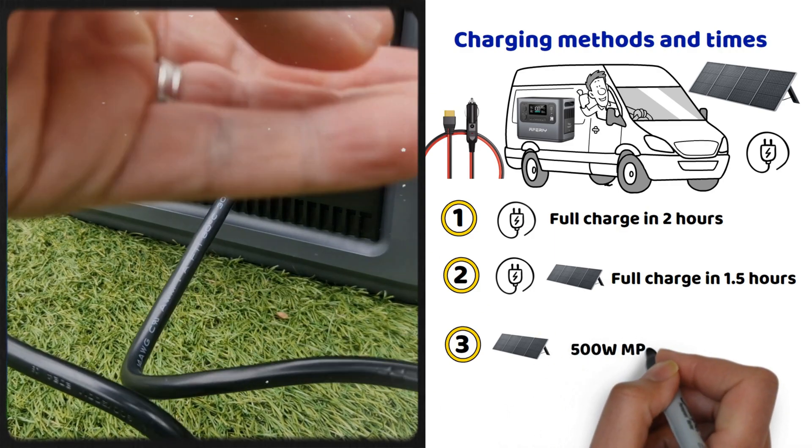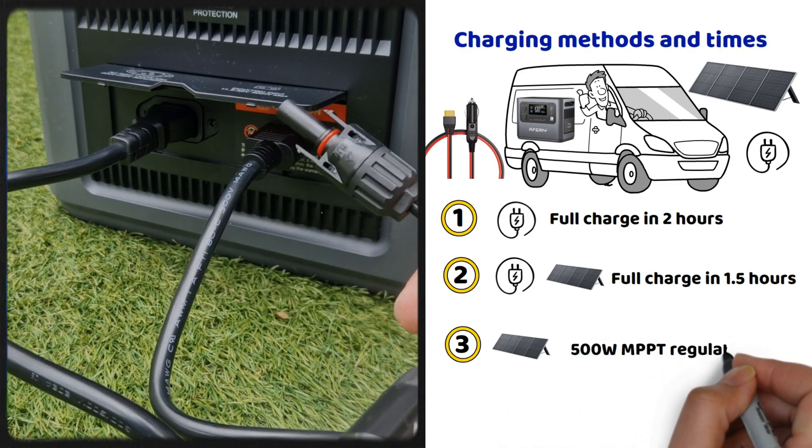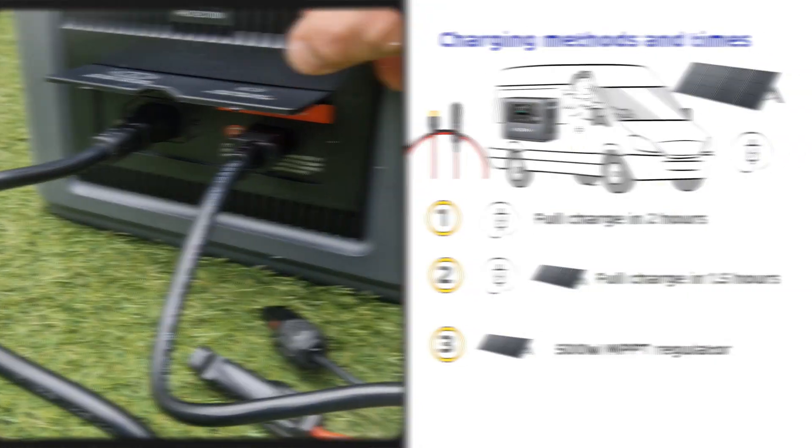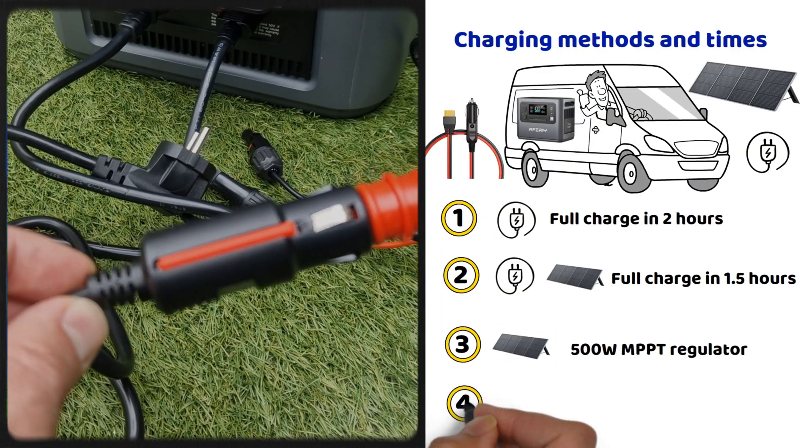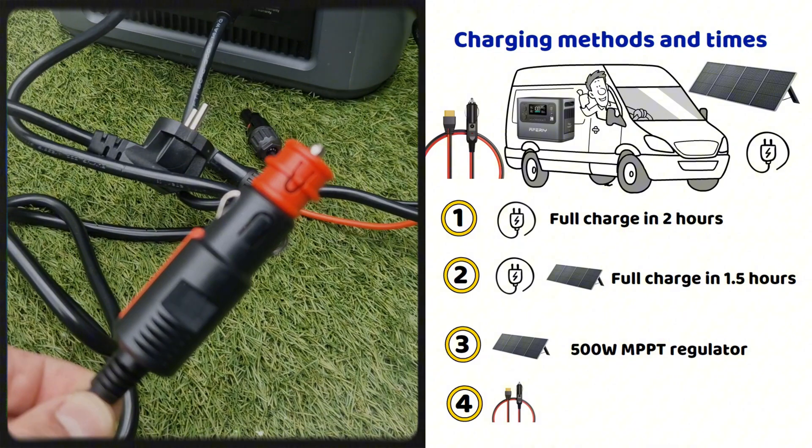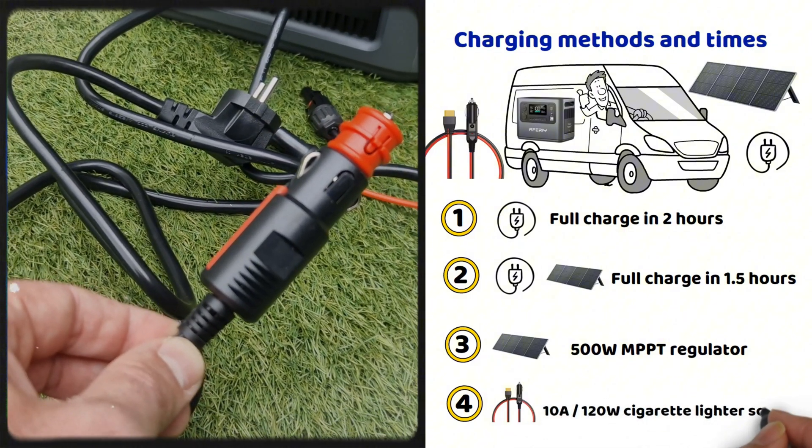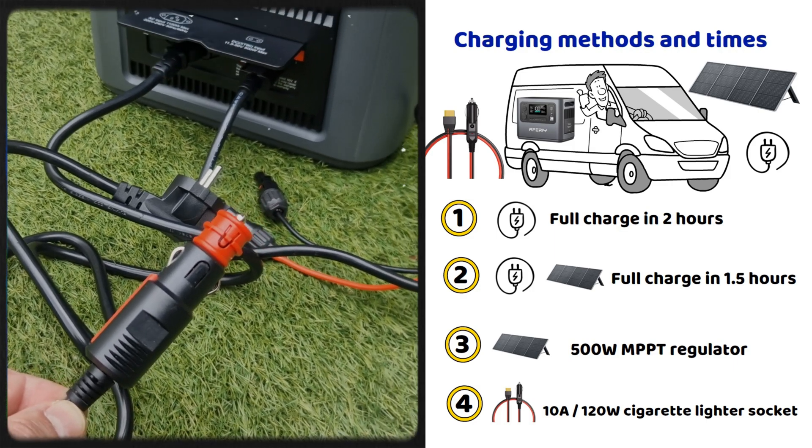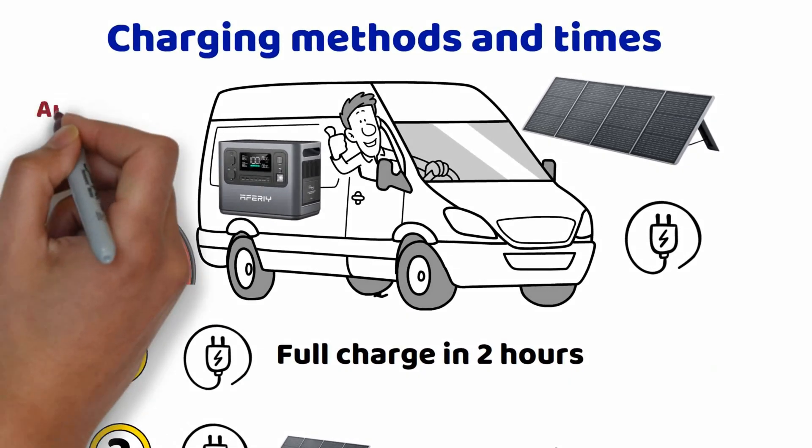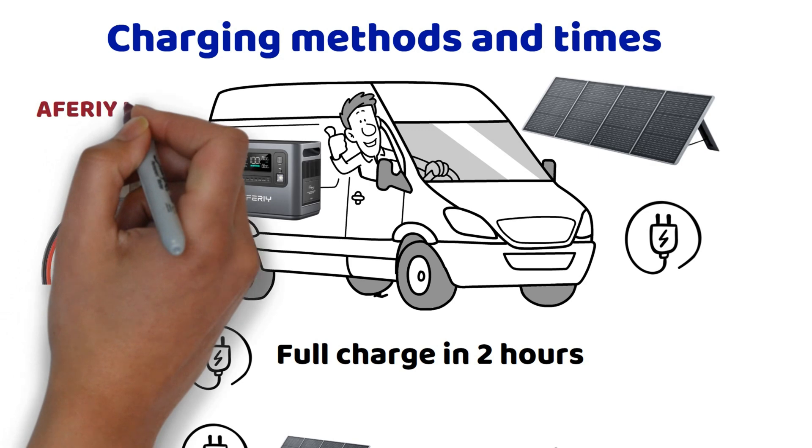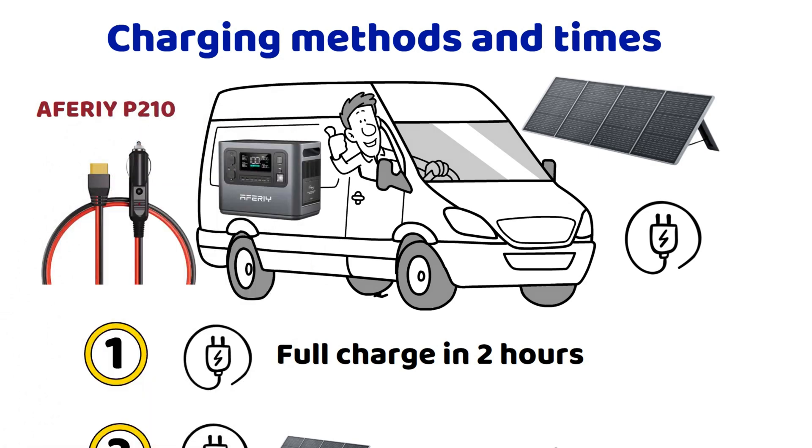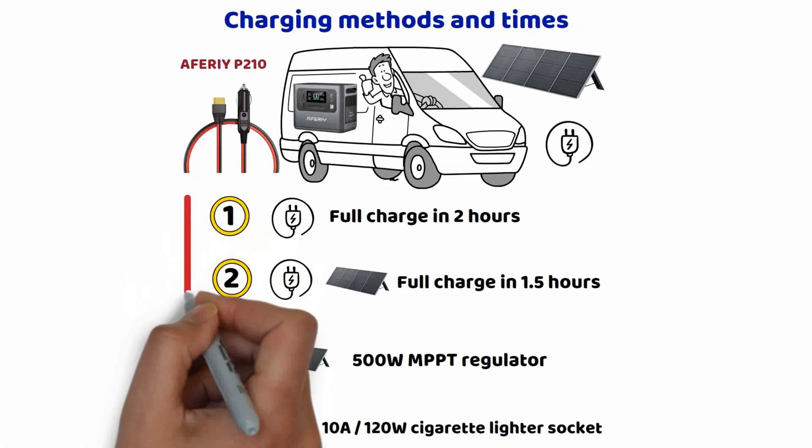Of course, you can charge the battery using a solar panel alone. The integrated MPPT controller has a maximum capacity of 500 watts, which is excellent for a camper van. Finally, you can charge it via the car's cigarette lighter while driving using a 10 amp plug. This provides about 120 watts, which isn't much, but the cigarette lighter socket in a vehicle is limited to this power. Otherwise, you would need to connect directly to the battery.